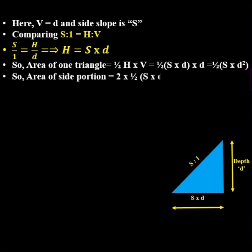Area of side portion or two triangles will be S into D square. Total cross-sectional area will be equal to B into D plus S into D square.